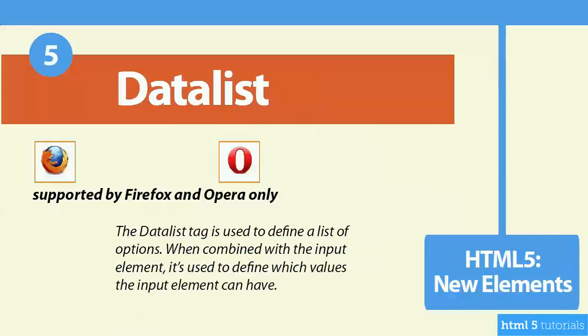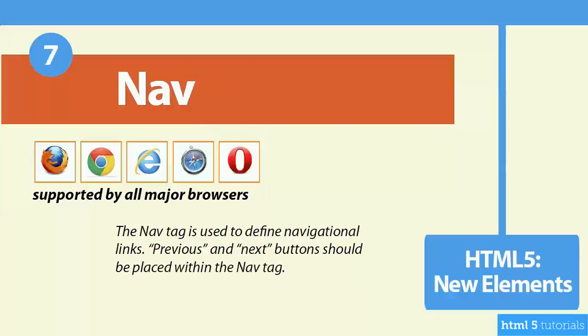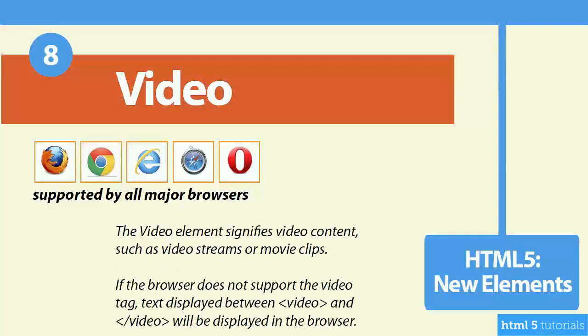The datalist is supported only by Firefox and Opera at this time and is used to define a list of options. The embed tag is supported by all the major browsers and is used to define content embedded within the web page, such as a plugin needed to display content properly. The nav tag is used to define navigation links and is supported by all the major browsers — any next or previous buttons will now be inside the nav tag. The video tag is also supported by all major browsers and is used to signify video content, such as movie clips or video streams.